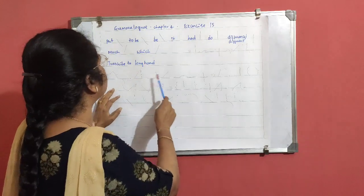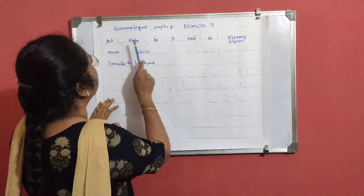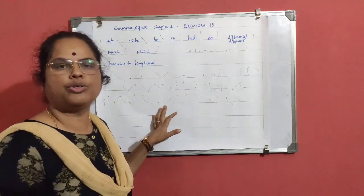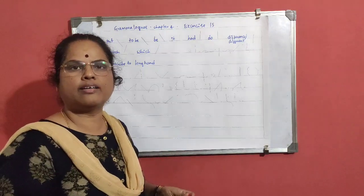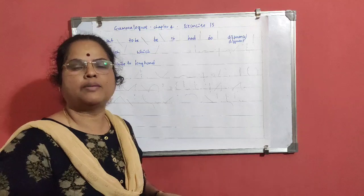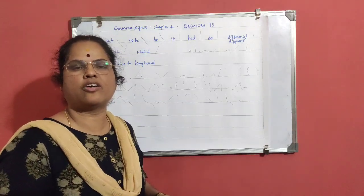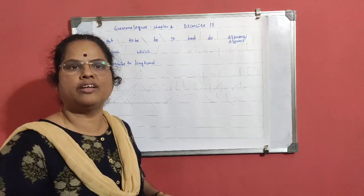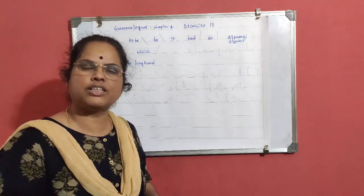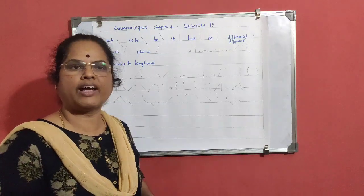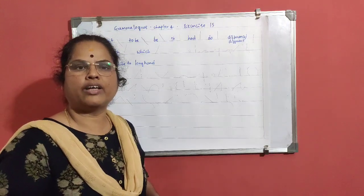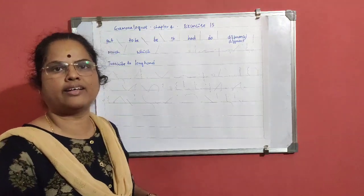I think you can easily make out the difference between P and B. Many students are informing me to use two different marker pens so that the difference can be identified. But the basic rule of shorthand is while writing shorthand, we are not supposed to lift the hand. So I am using pencil only. While taking dictation in the pad, you have to use pencil only. If you write it in a pen, it will not be visible and you cannot make out the difference between light and dark strokes.